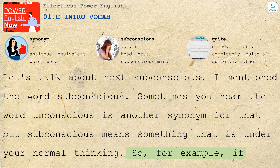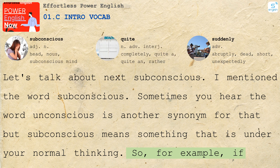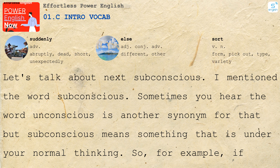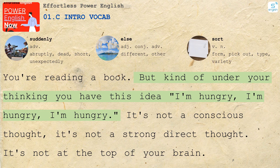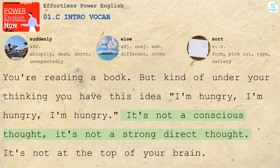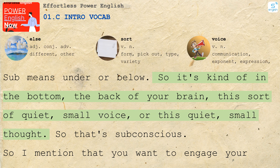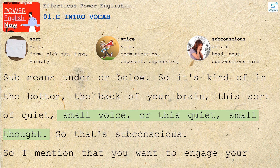Subconscious means something that is under your normal thinking. For example, if you're quite hungry, suddenly you find that you're hungry. But you're busy — you're thinking about something else, you're reading a book. But kind of under your thinking, you have this idea: I'm hungry. It's not a conscious thought, not a strong direct thought. It's not at the top of your brain. Sub means under or below. So it's kind of in the bottom, the back of your brain — this sort of quiet, small voice or quiet, small thought. So that's subconscious.